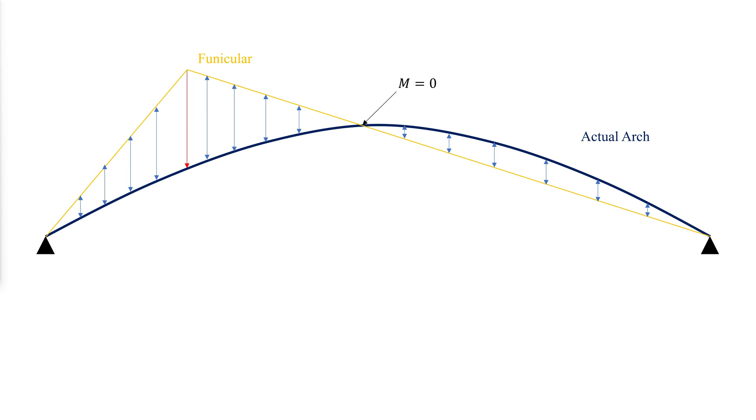At the only location where the curved member meets the funicular polygon, the moment is zero. For other locations on the arc, the moment is the product of the axial load in the funicular member and the offset distance between the funicular curve and the arc member.